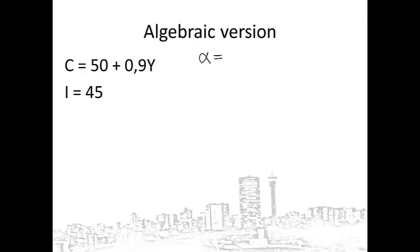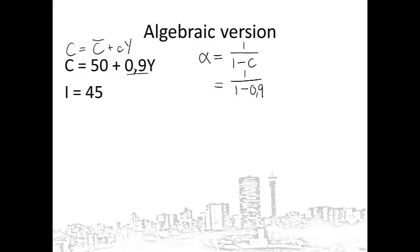The multiplier is written with the Greek letter alpha. The formula is 1 over 1 minus the marginal propensity to consume, which gives 1 over 1 minus 0.9. If you know your consumption function, it follows the formula C equals autonomous consumption plus small c times y. So that 0.9 is where I found my marginal propensity to consume.